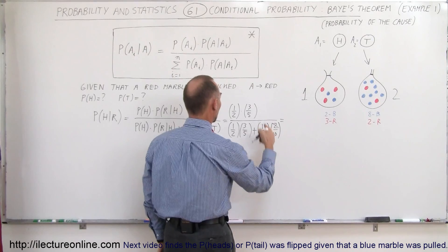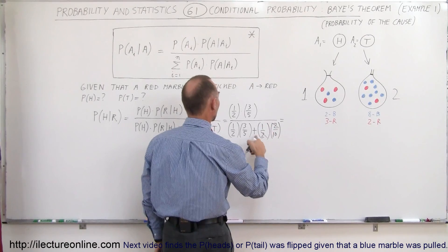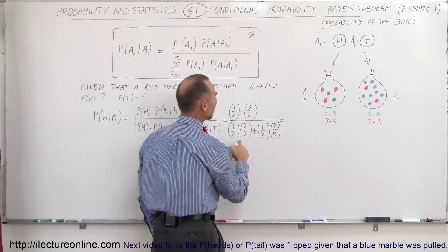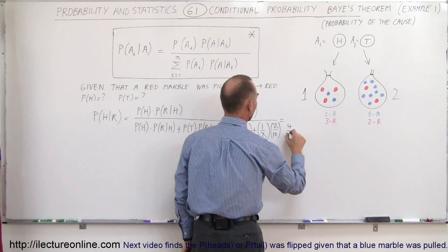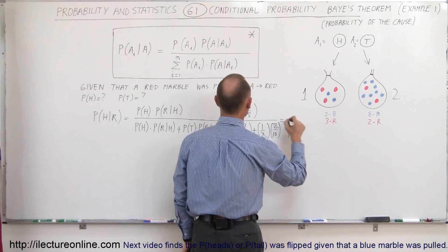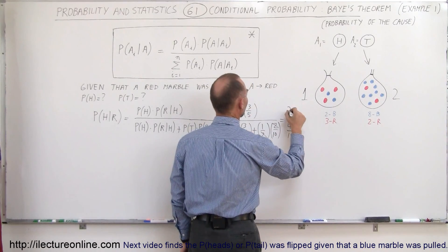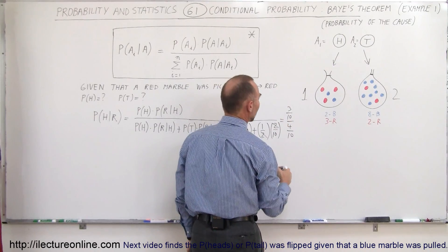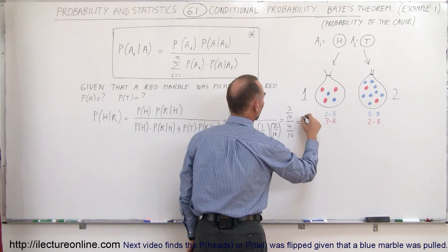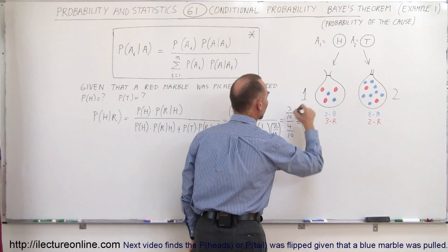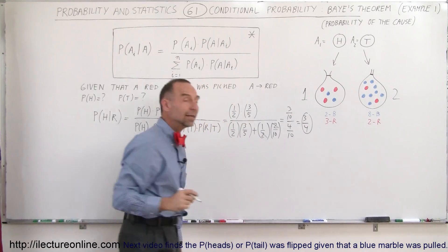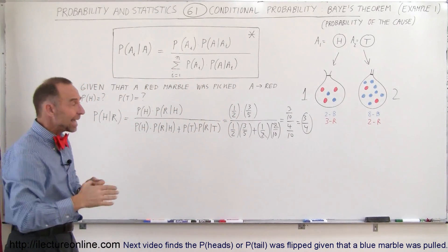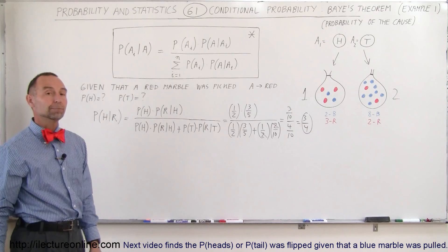Simplifying: one-half times two-tenths gives one-tenth, and one-half times three-fifths gives three-tenths, so the denominator is one-tenth plus three-tenths equals four-tenths. In the numerator we get three-tenths, so three-tenths divided by four-tenths equals three-quarters. That is the probability of having tossed heads provided we pulled the red marble.